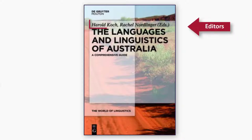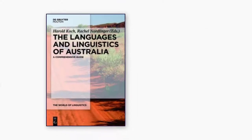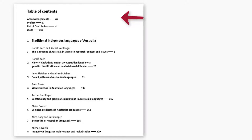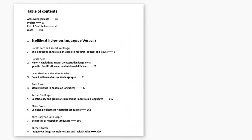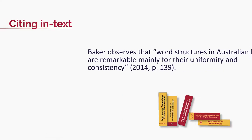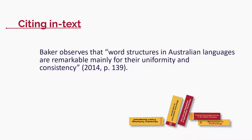Here are the editors on the front cover. In the table of contents, we can see each chapter and its authors. This means we need to cite the chapter author rather than the whole book. When citing in text, acknowledge the chapter author, not the editor.